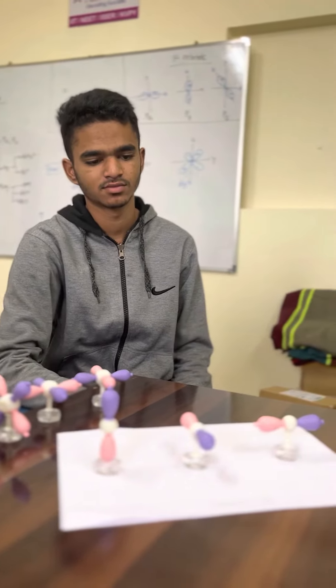These 3 orbitals are dumbbell shaped—p orbitals, 3 of them. Let's move on to the 5 d orbitals.